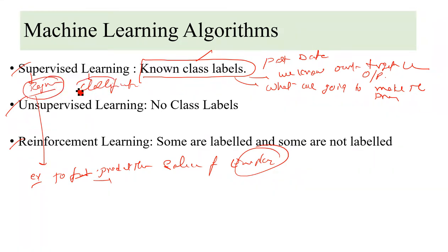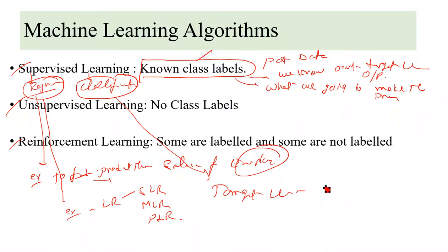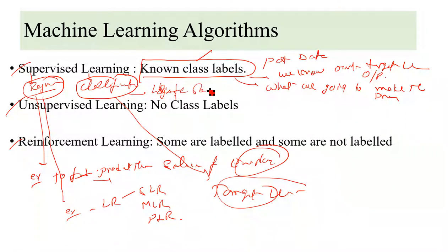Examples of regression algorithms are simple linear regression, multiple linear regression, and polynomial linear regression. For classification problems, based on whether the target variable is binary or multi-class, we apply classification algorithms such as logistic regression, decision tree, random forest classifier, support vector machine, and KNN algorithm.